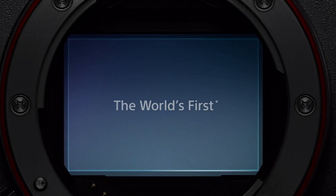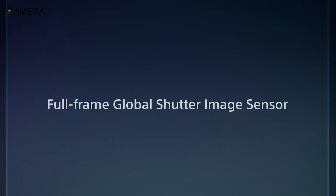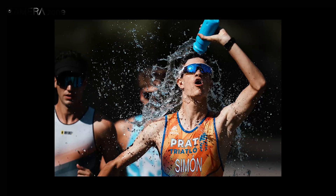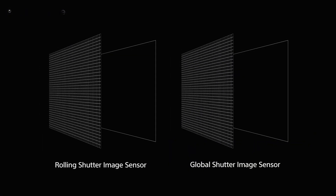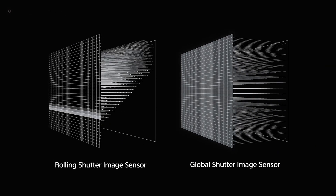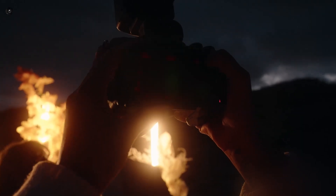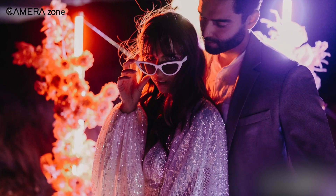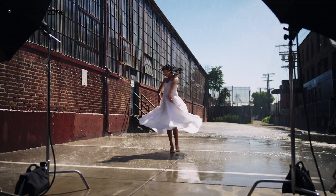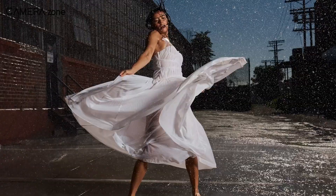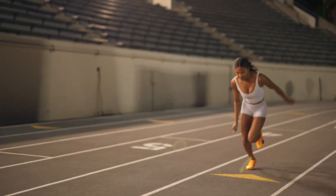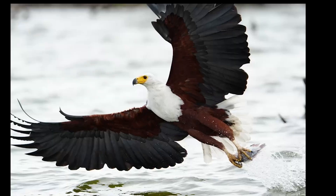A global shutter sensor exposes the entire frame simultaneously, meaning all parts of the image are captured at precisely the same instant. Rather than progressive scanning, a global shutter reads the whole sensor at once after exposing the full frame. This eliminates distortions inherent in rolling shutters. By freezing the entire scene instantly, global shutters offer crystal sharpness when photographing subjects in rapid motion, making them ideal for applications like sports, wildlife, and other fast action.